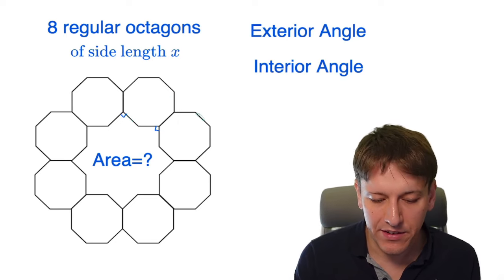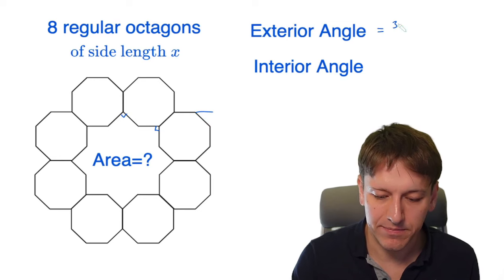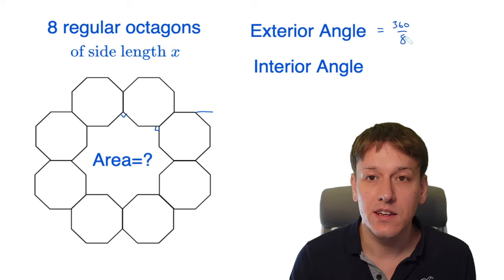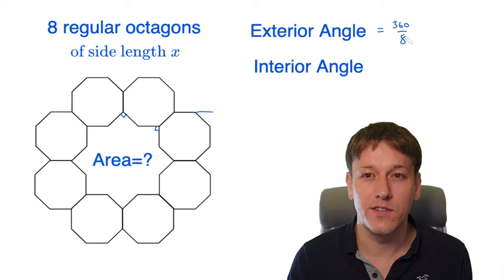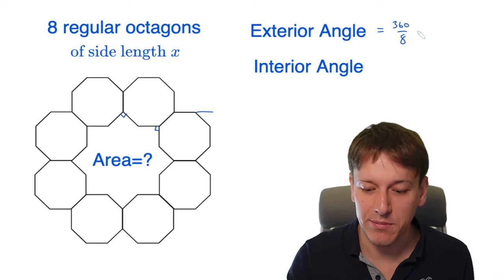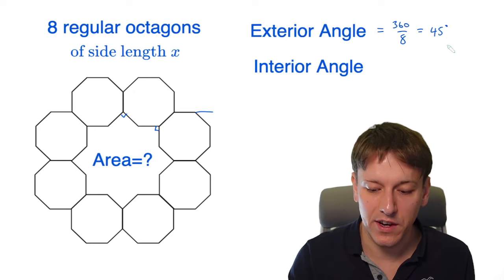So for the octagon, the exterior angle is 360 divided by 8. The exterior angle formula for polygons is always 360 divided by the number of sides, and that gives us 45 degrees.